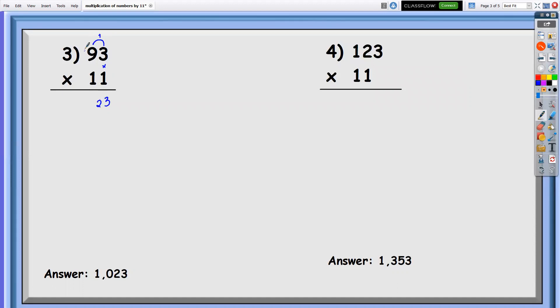Carry one for this. We have carry one. Nine times one is nine, plus one which is the carry. Nine plus one is 10. Therefore, the answer there is 1,023.